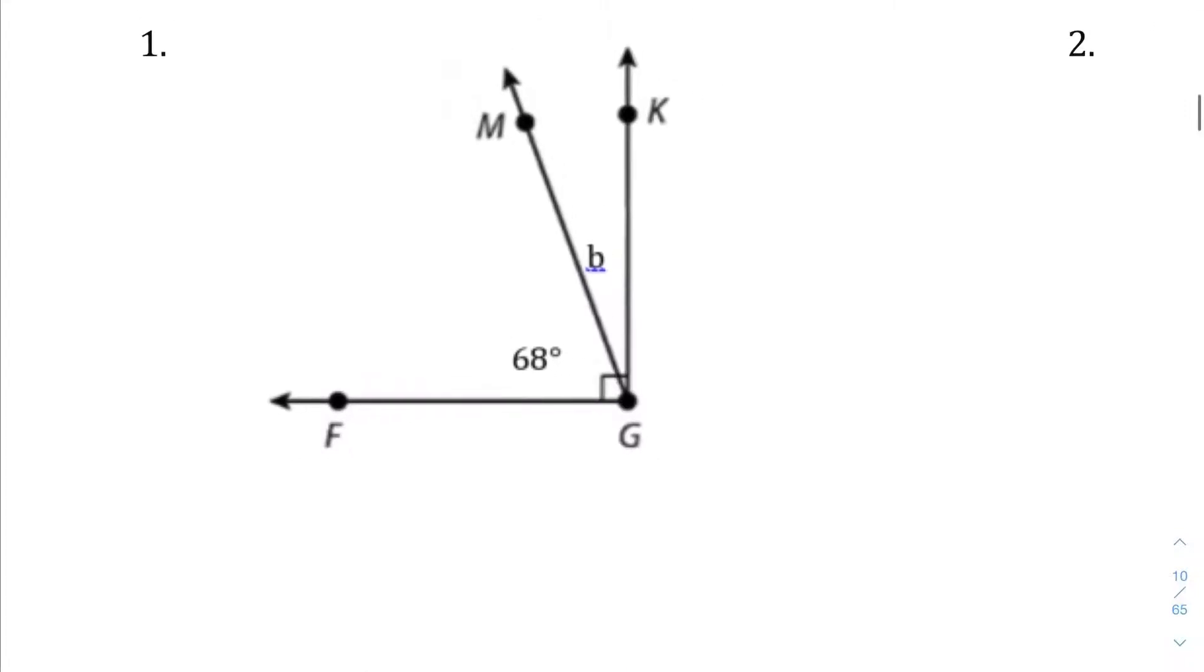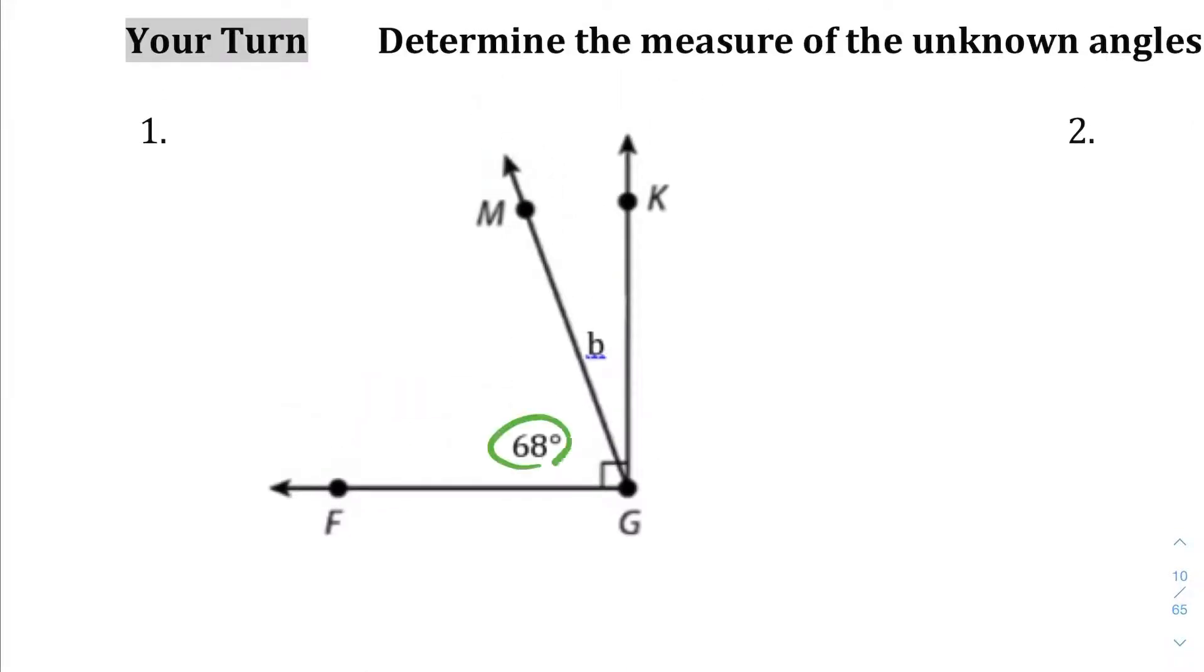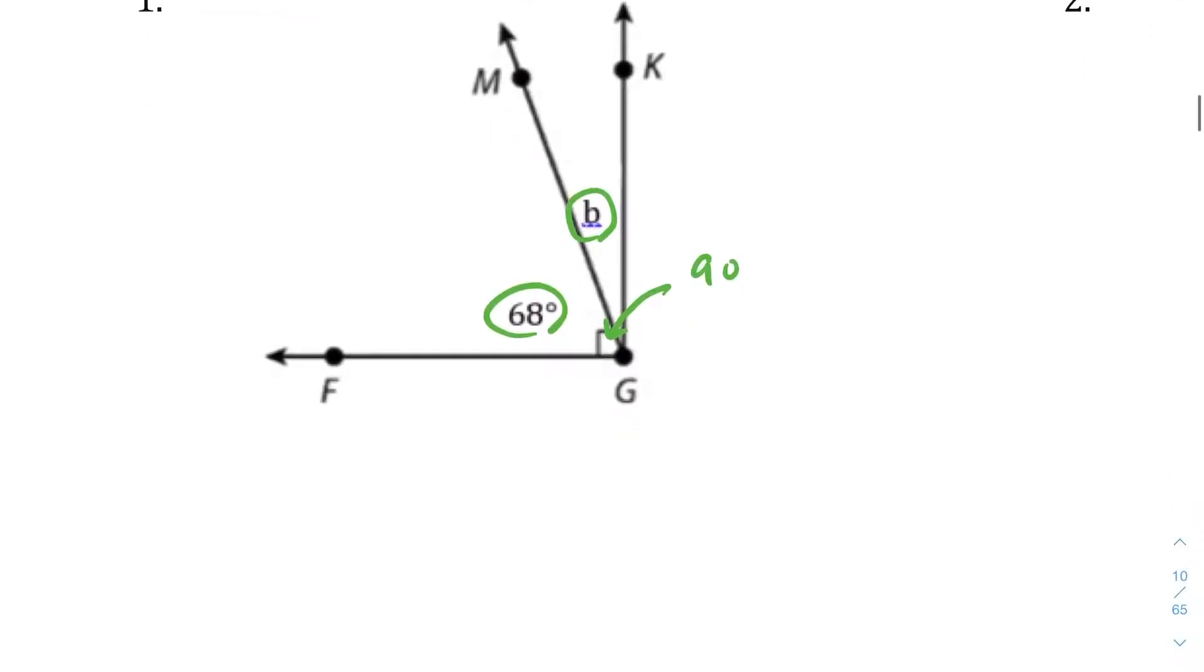Here I have two angles. I have angle 68 and angle B. I can tell by this symbol here, that little square, that is a geometry sign to tell you that this is a right angle, which equals 90 degrees. Since these are complementary, I'm going to write the equation 68 + B equals 90. I don't really like the variable B because it looks like 6 too many times. I've seen so many students make that mistake. But since we're doing this, we won't make that mistake. B equals 22 degrees. Easy peasy.